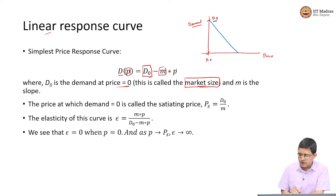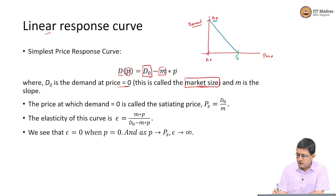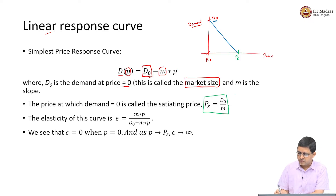The price at which demand is equal to 0 is called the satiating price. If you increase the price beyond Ps, demand is expected to be 0. This is really the highest price that you can charge. Set the demand equal to 0 and you get the satiating price as D0 divided by m. So we have looked at the y-intercept, which is the market size, and the x-intercept, which is called the satiating price.